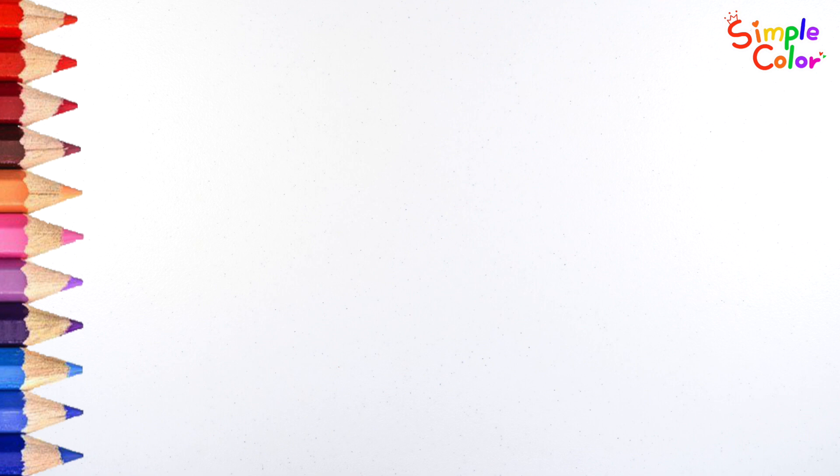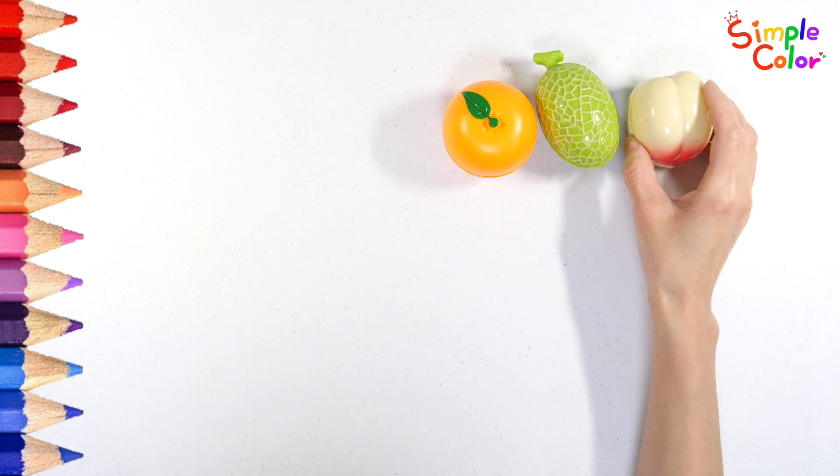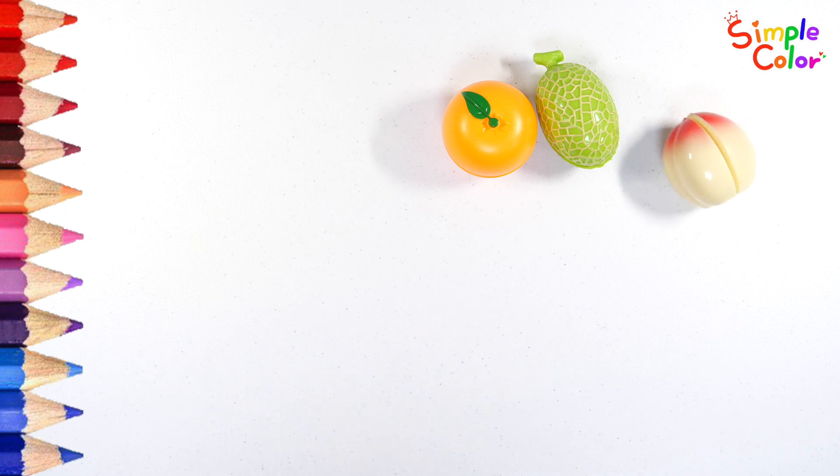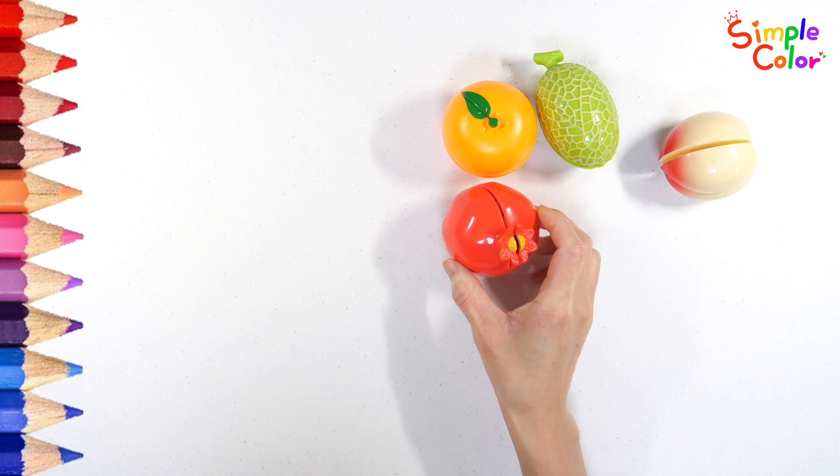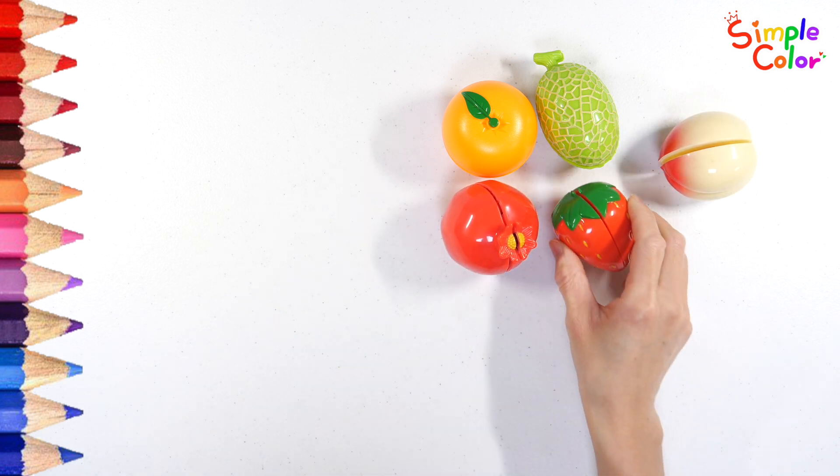Let's learn numbers by counting fruits one by one. 1, 2, 3, 4, 5.